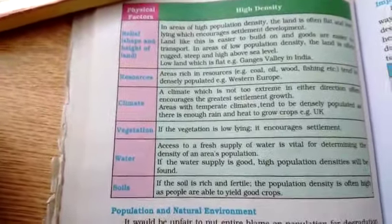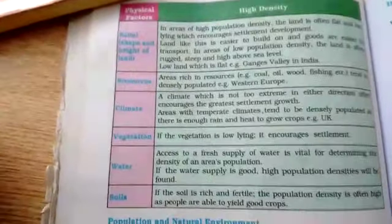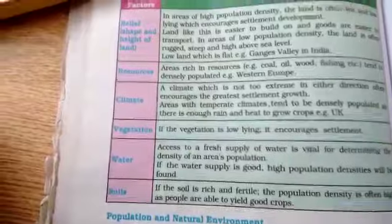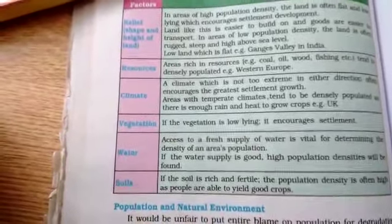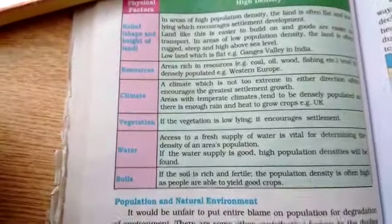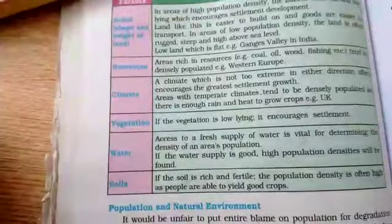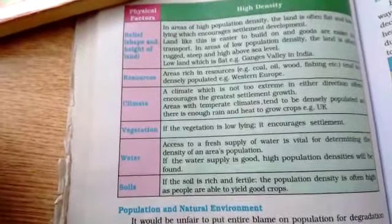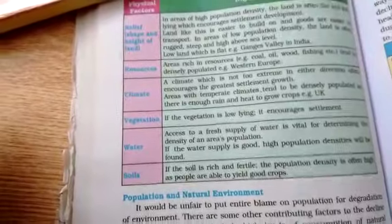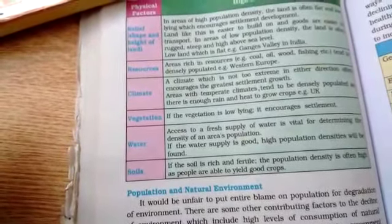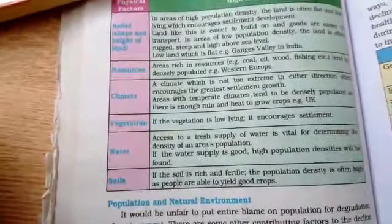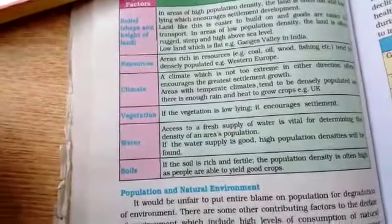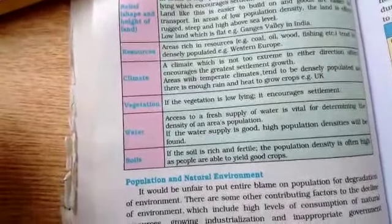Last but not least, fertile soil encourages vegetation and can grow good crops. As a result, the food supply chain will move smoothly, and that is why people will settle down in areas with fertile soil.